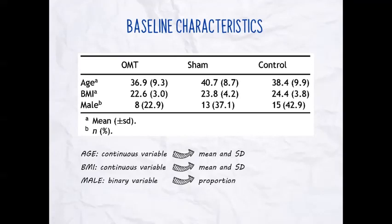On the other hand, for gender, here we see male — they decided to use proportion, and it's a good choice since the variable is binary, so categorical.